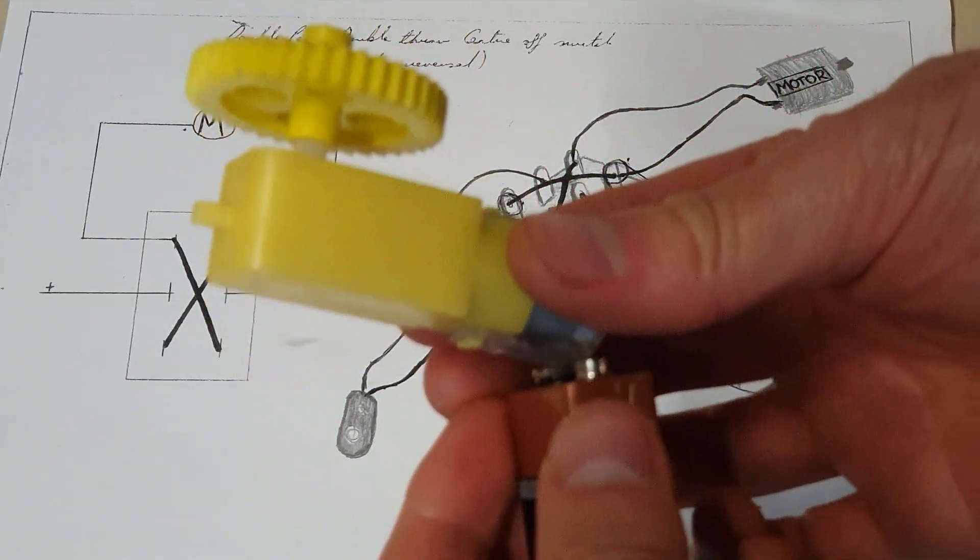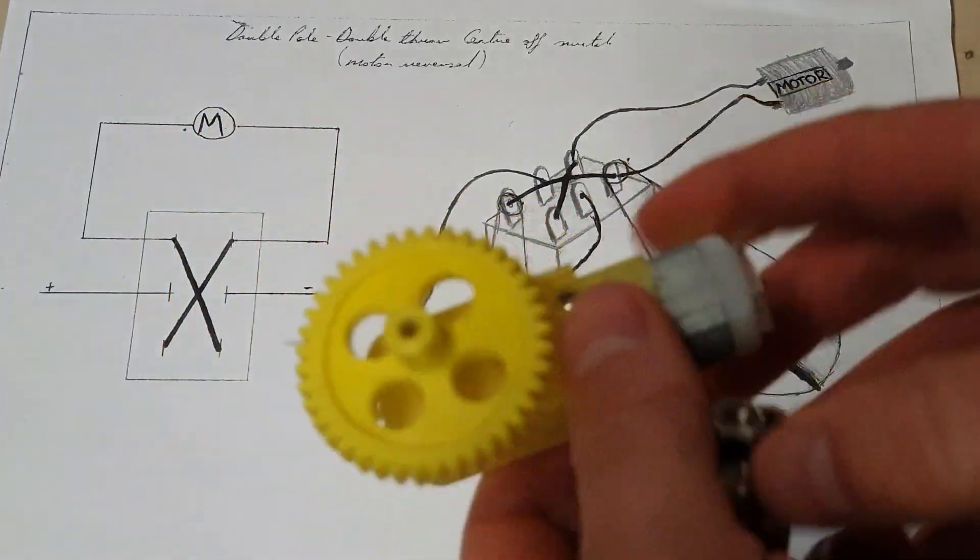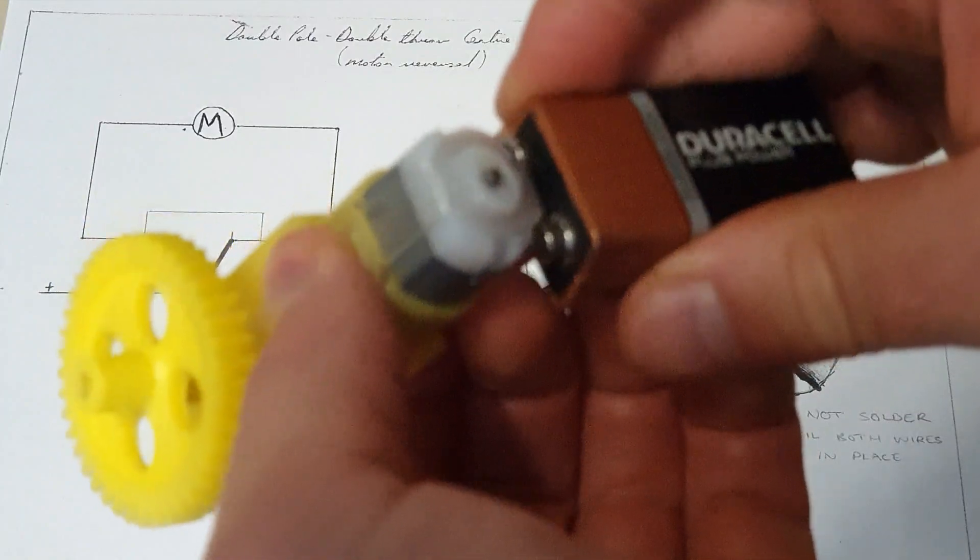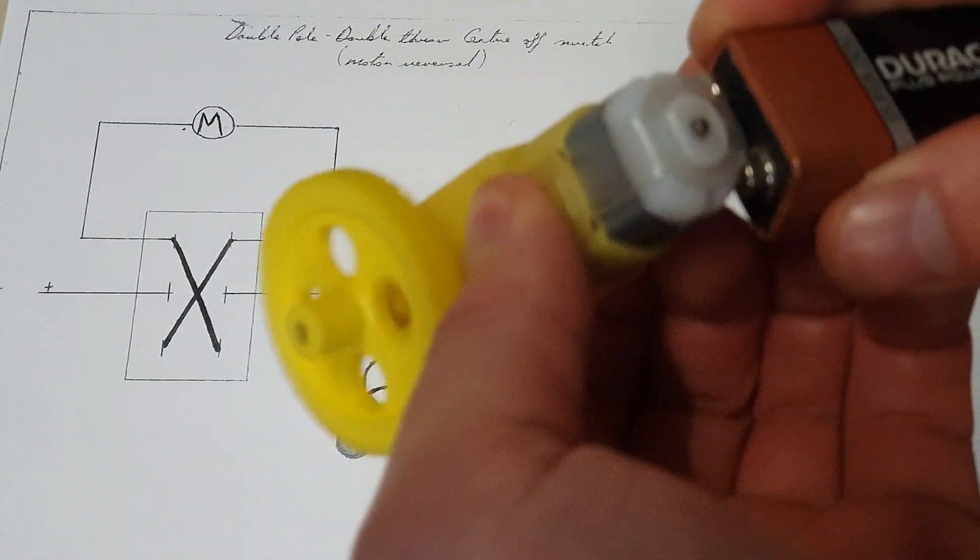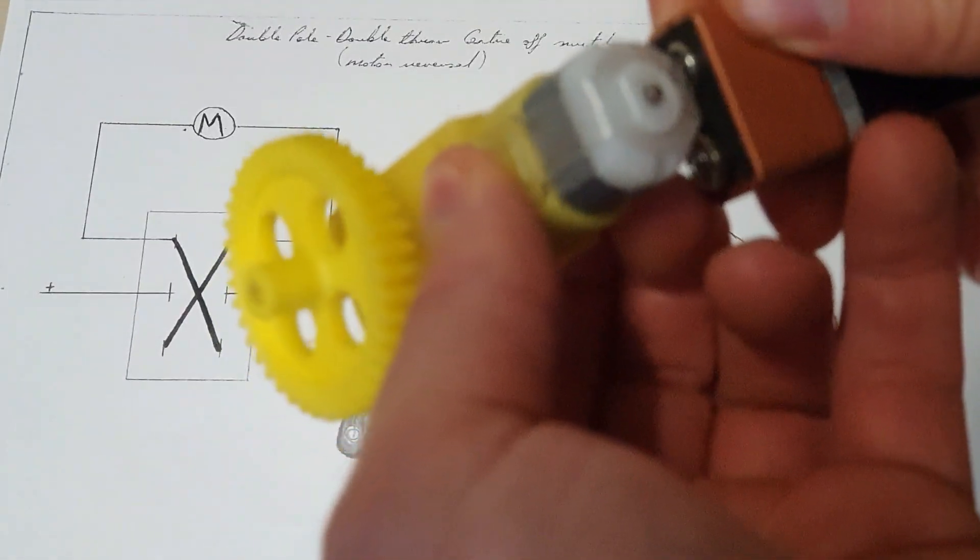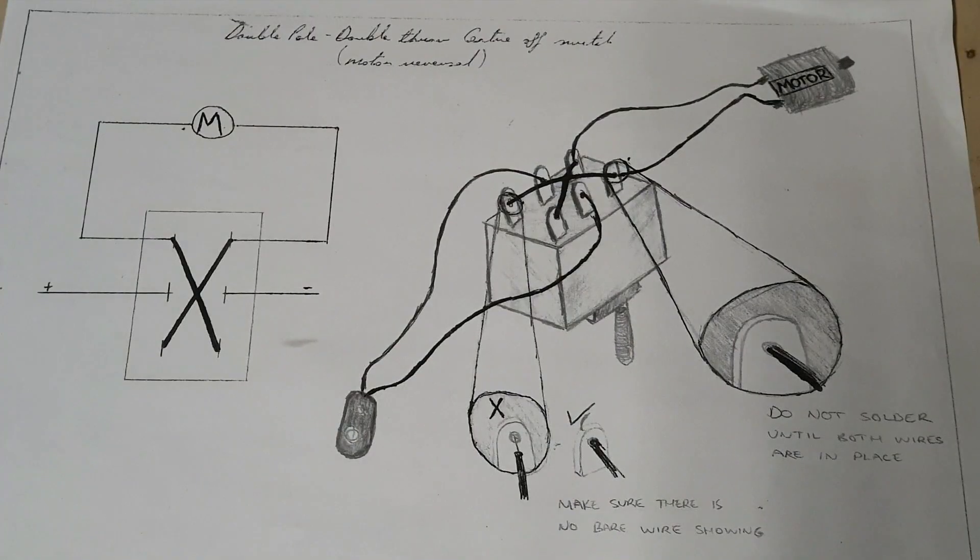When we connect a battery to these motor contacts here, if we connect it one way, it goes that way. Then I'm going to switch the battery around and connect it the opposite way. If you notice the motor goes in the opposite direction. So that's the principle of how a double pole, double throw, center off switch works.